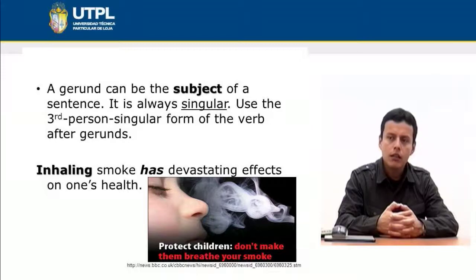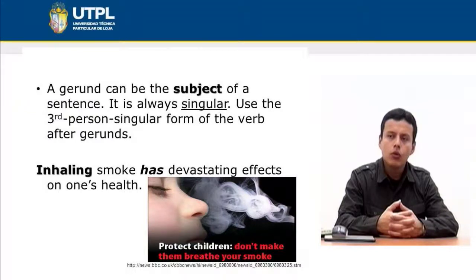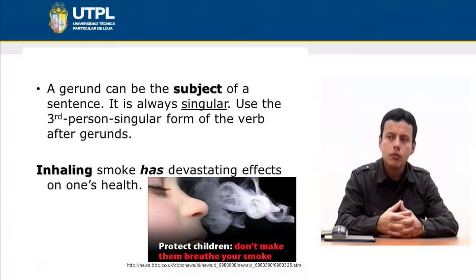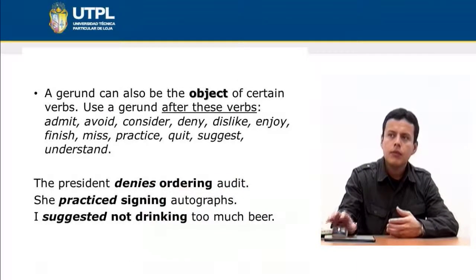The gerund 'inhaling' — the verb inhale plus -ing — along with the noun 'smoke,' is acting as the subject of the sentence. Because it is singular, you must use 'has' — the third person singular form of the verb 'have' — to agree with the singular subject.